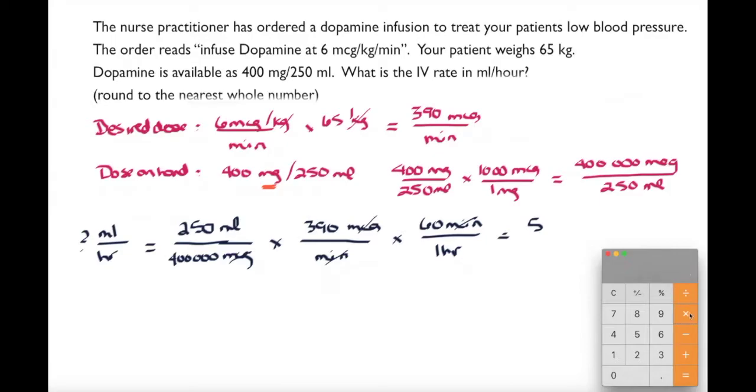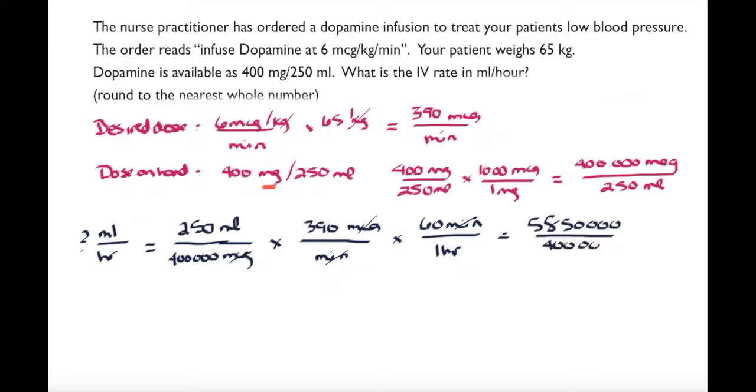So if I do this calculation: 250 times by 390 times by 60, I get 5,850,000 mils over 400,000 hours. Continue to calculate that out, my answer is 14.6 mils per hour. It asked me to round to the nearest whole number, so my answer is 15 mils per hour.